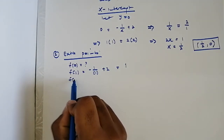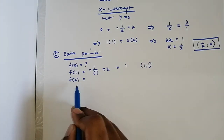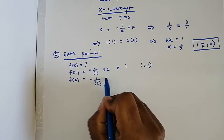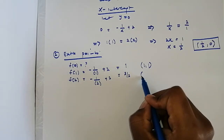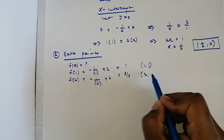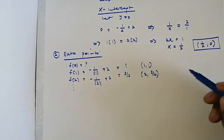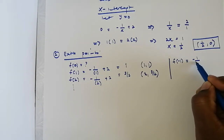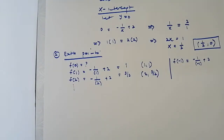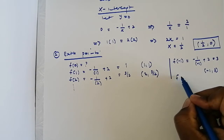f(2) equals negative one divided by two plus two, so negative one divided by four, which is negative one quarter or negative 0.25. For negative values: f(-1) equals negative one divided by negative one plus two, which is negative one divided by one, giving us negative one. So the point is (-1, -1).